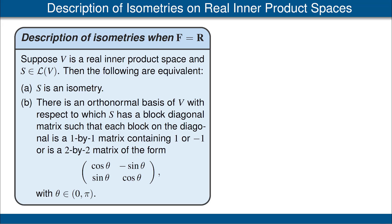Here is the characterization. Suppose V is a real inner product space and S is an operator on V. Then the following are equivalent. Condition A: S is an isometry. Condition B: there is an orthonormal basis of V with respect to which S has a block diagonal matrix, such that each block on the diagonal is either a 1×1 matrix containing 1 or −1, or a 2×2 matrix of the rotation form, where theta is an angle in the interval from 0 to pi. This says that an isometry on a real inner product space gives a decomposition of the vector space as a direct sum of subspaces, and on each subspace the isometry is either the identity, the negative of the identity, or a rotation by some angle.